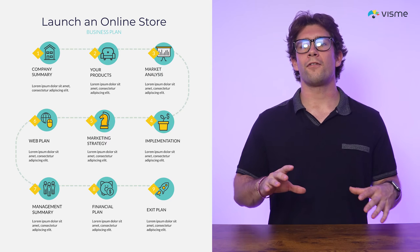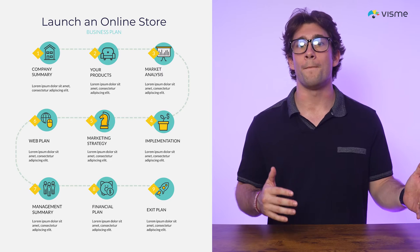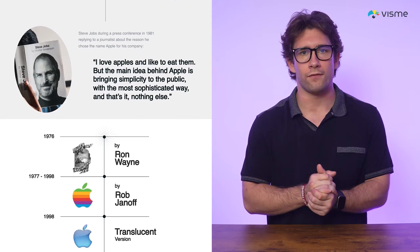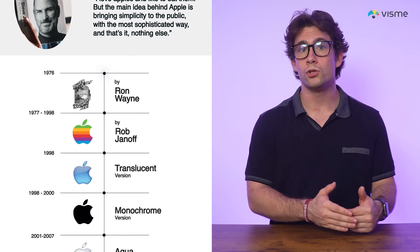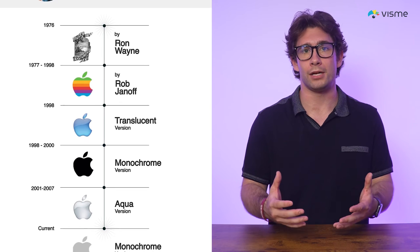The third type is timeline infographics, ideal for showcasing sequences of events such as historical data, project milestones, or a brand's growth story. This is perfect for illustrating how a concept has evolved, detailing key milestones, or mapping out a project's phases. For instance, a timeline infographic of your brand's history can illustrate your journey from launch to present day, highlighting key moments that shaped your company — not only informing your audience but also building a deeper connection by visually sharing your story.